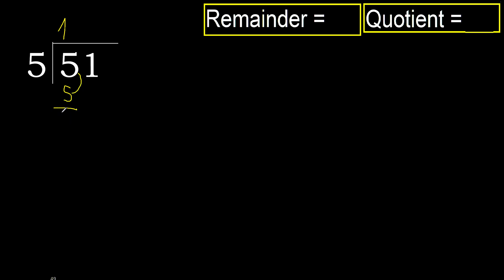Subtract: 5 minus 5 equals 0. Next, eliminate the 0 on this side.